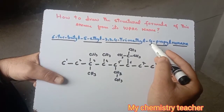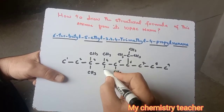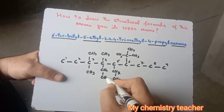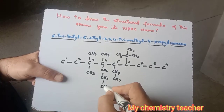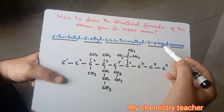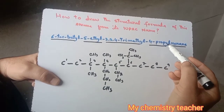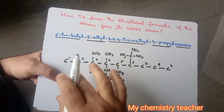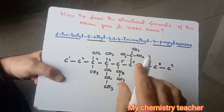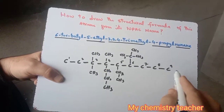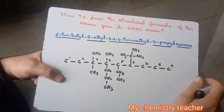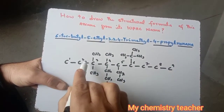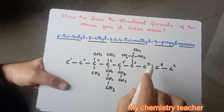The last substituent is a propyl group, also located on carbon number four. We place it as CH₂CH₂CH₂CH₃. Remember, if a simple propyl name is given as a substituent, it refers to an n-propyl group. We have now placed all substituents at their proper positions on the longest continuous chain.